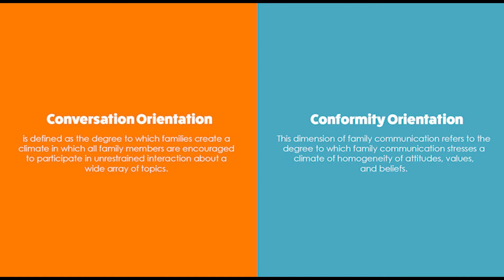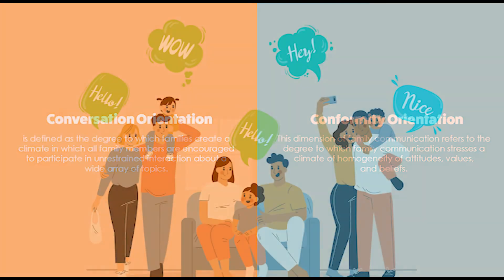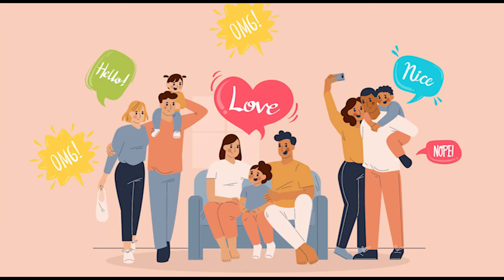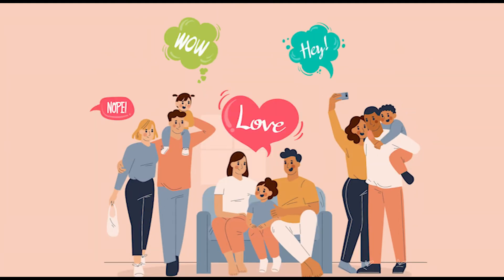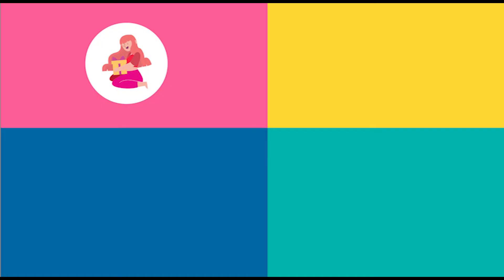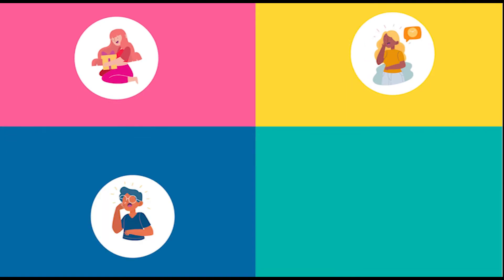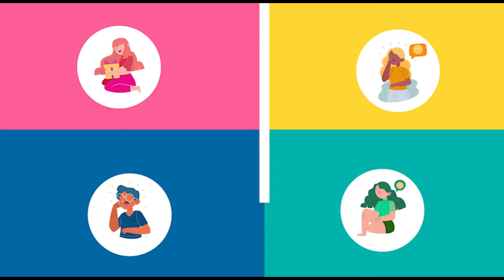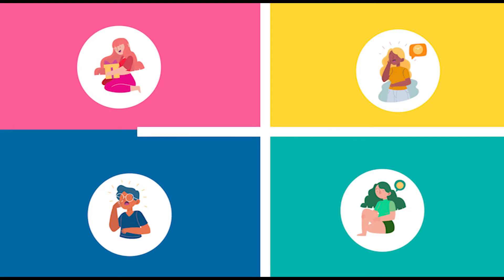Conformity Orientation interactions typically focus on harmony, conflict avoidance, and the interdependence of family members' intergenerational exchanges. Communication in these families reflects allegiance to parents and other adults. Therefore, to predict the influence of family communication patterns on family outcomes, it is rarely sufficient to investigate only one dimension without assessing the other, because the two dimensions of conformity orientation and conversation orientation interact consistently with one another.